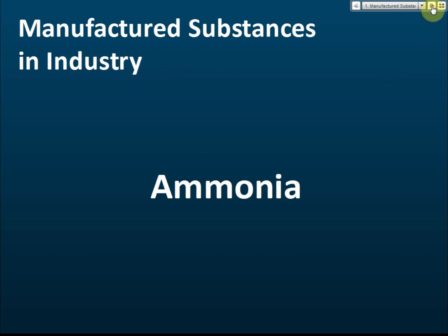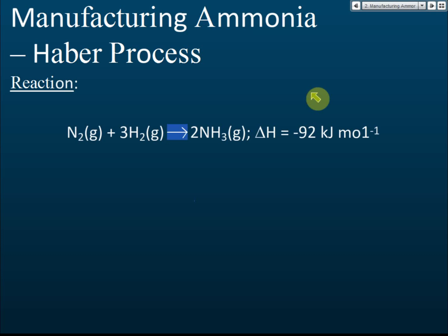We will discuss the process of producing ammonia in industry. The first thing to know is the name of the process — it is called the Haber process. The Haber process is named after a scientist. Unlike the contact process, which has four stages to produce sulfuric acid, the Haber process has just one step or one stage, making it much simpler.